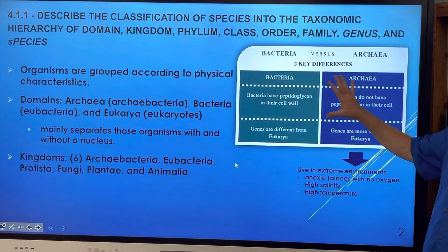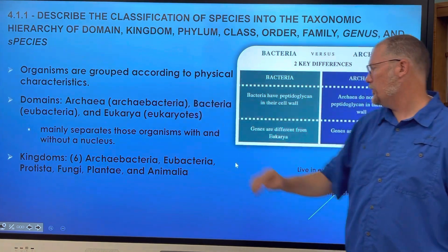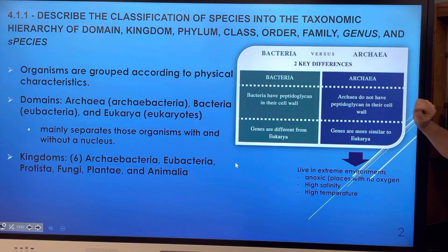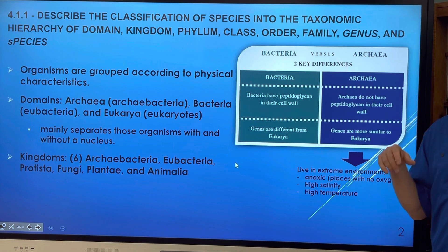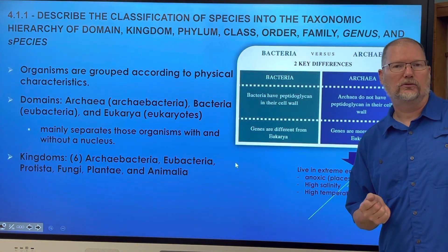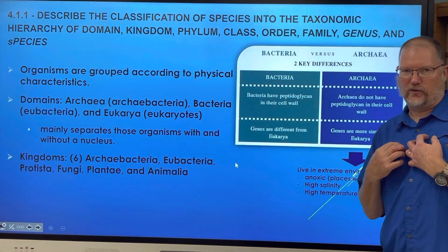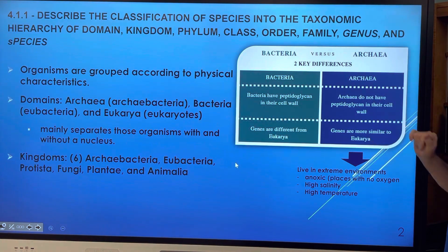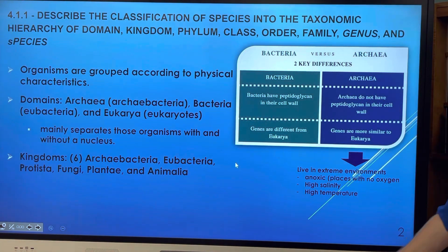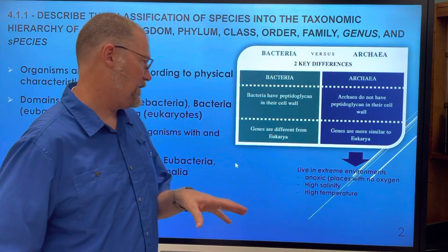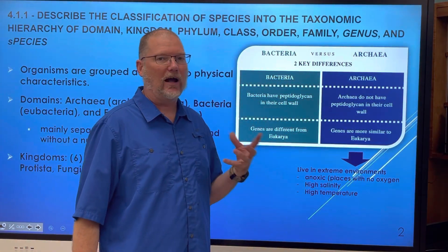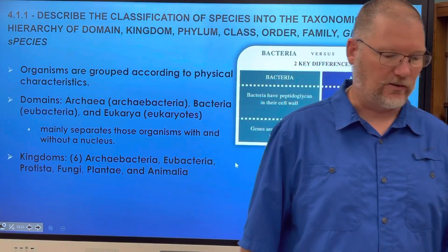The main difference between the bacteria and the archaea bacteria is a chemical — a macromolecule — that bacteria have but archaea do not. The bacteria's genes are different from eukaryotes like us, while in the archaea bacteria, the genes are more similar to eukaryotes. The archaea bacteria live in highly extreme environments; they're called extremophiles — places that are anoxic, high salinity, or high temperature.